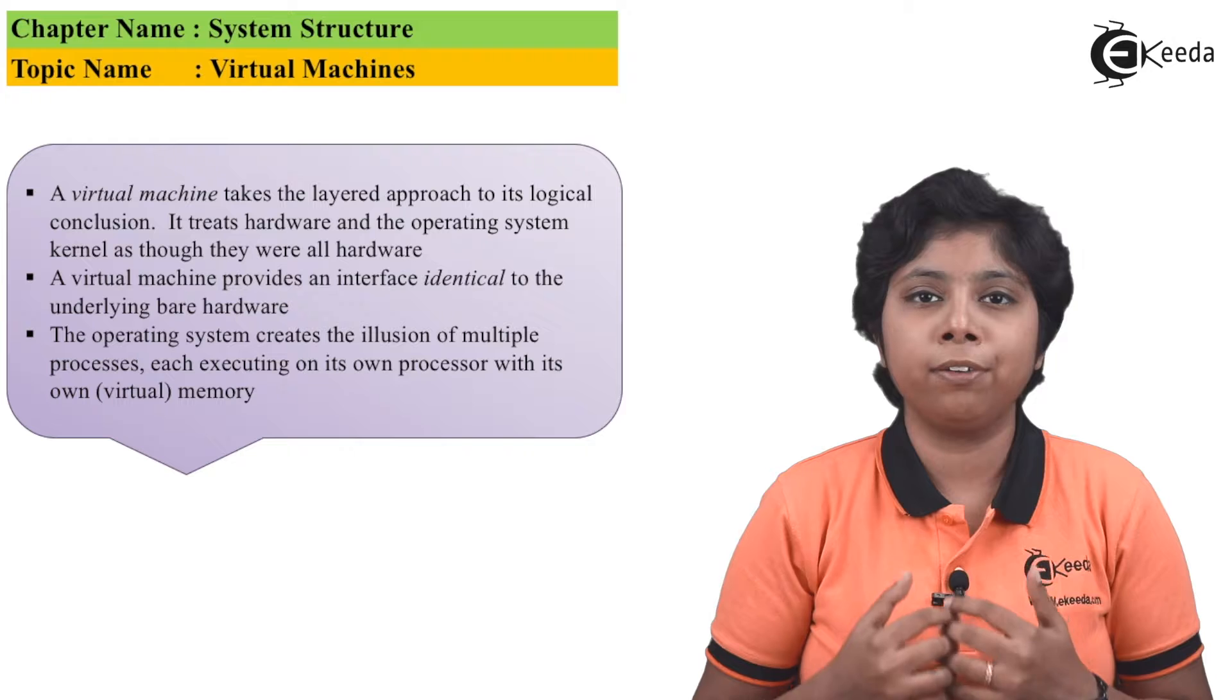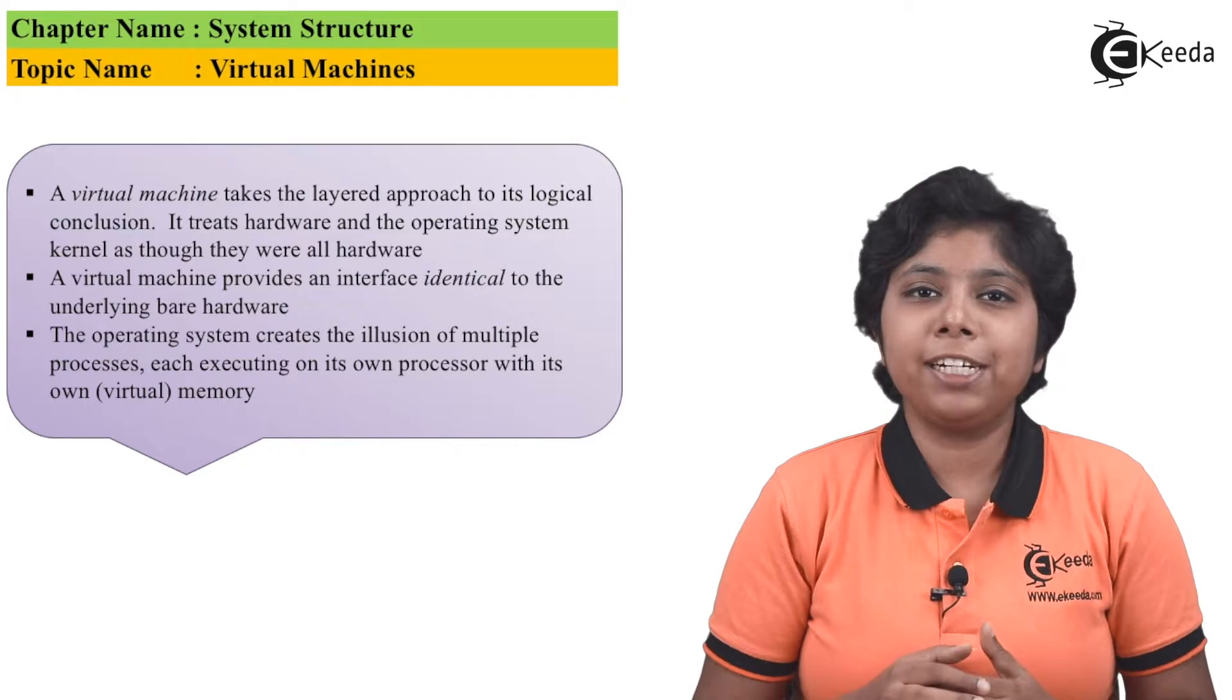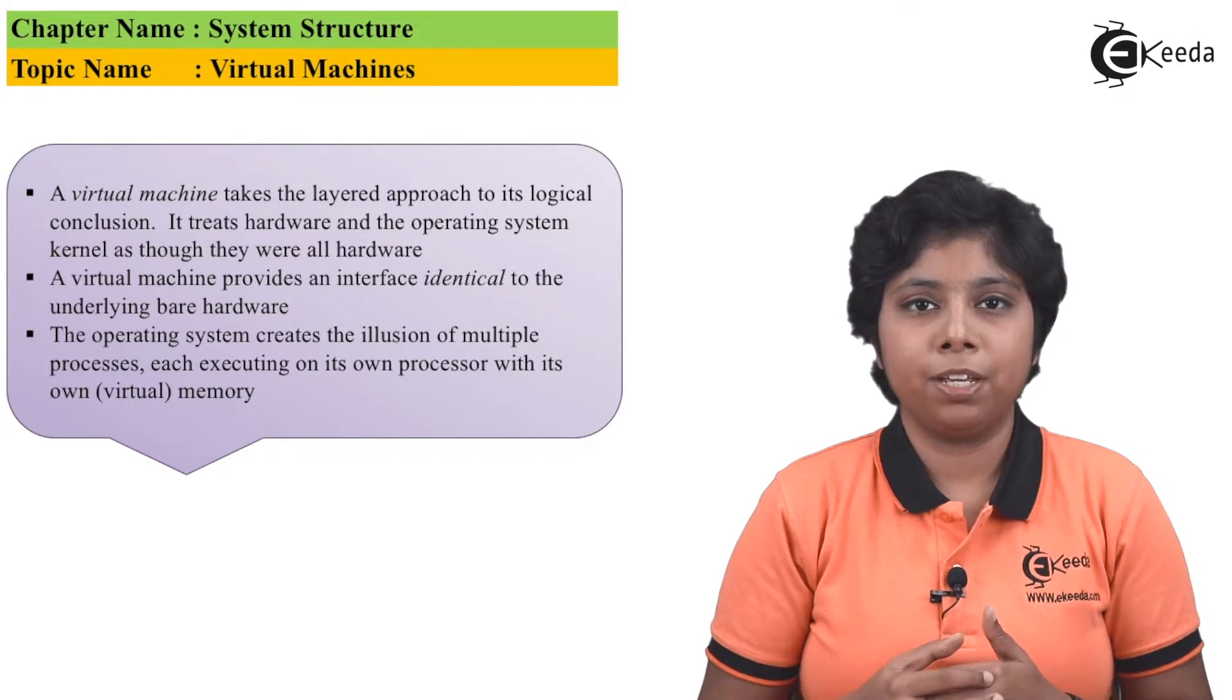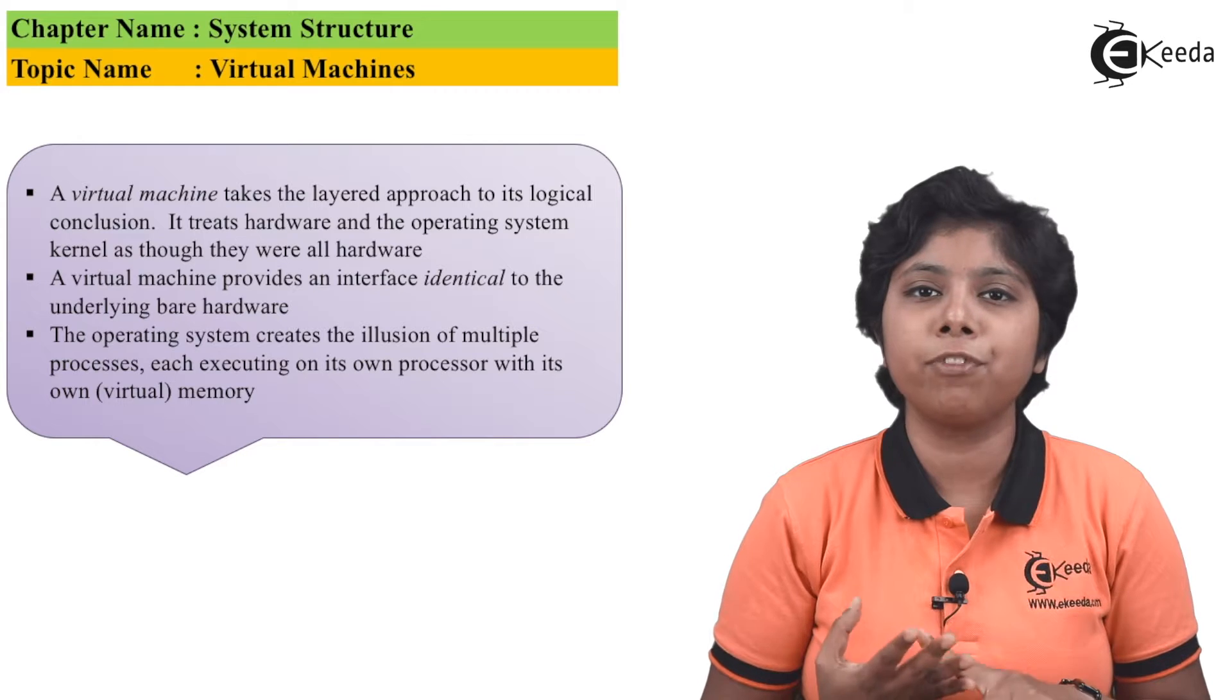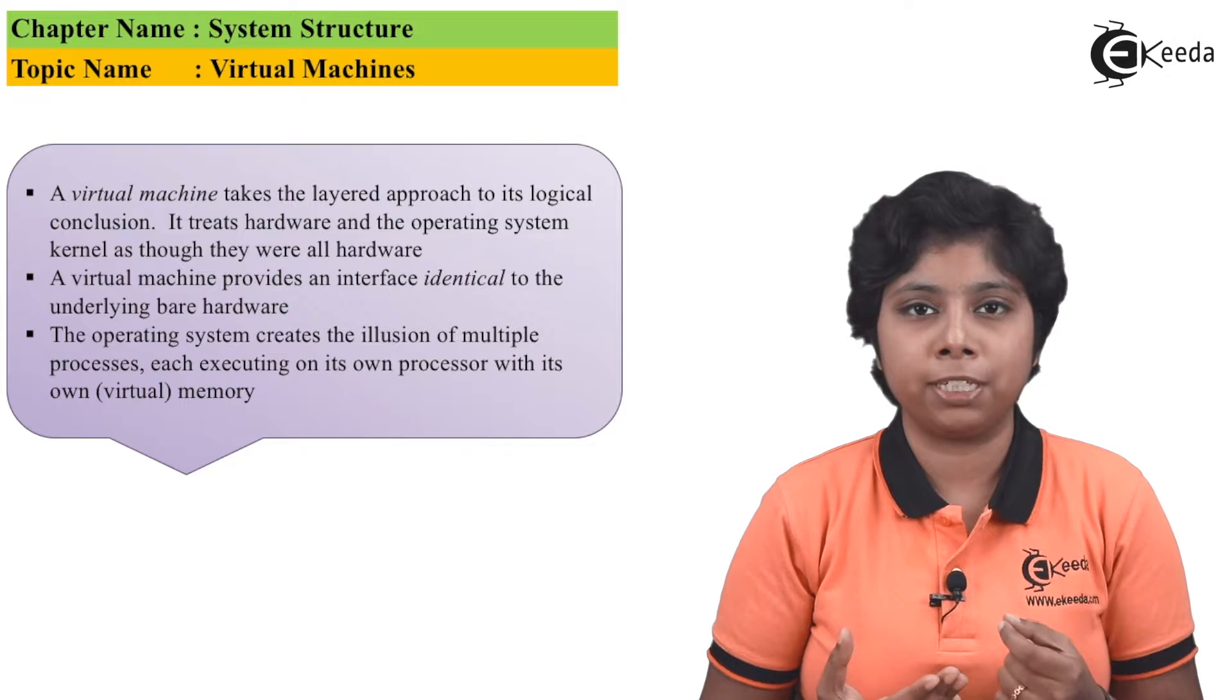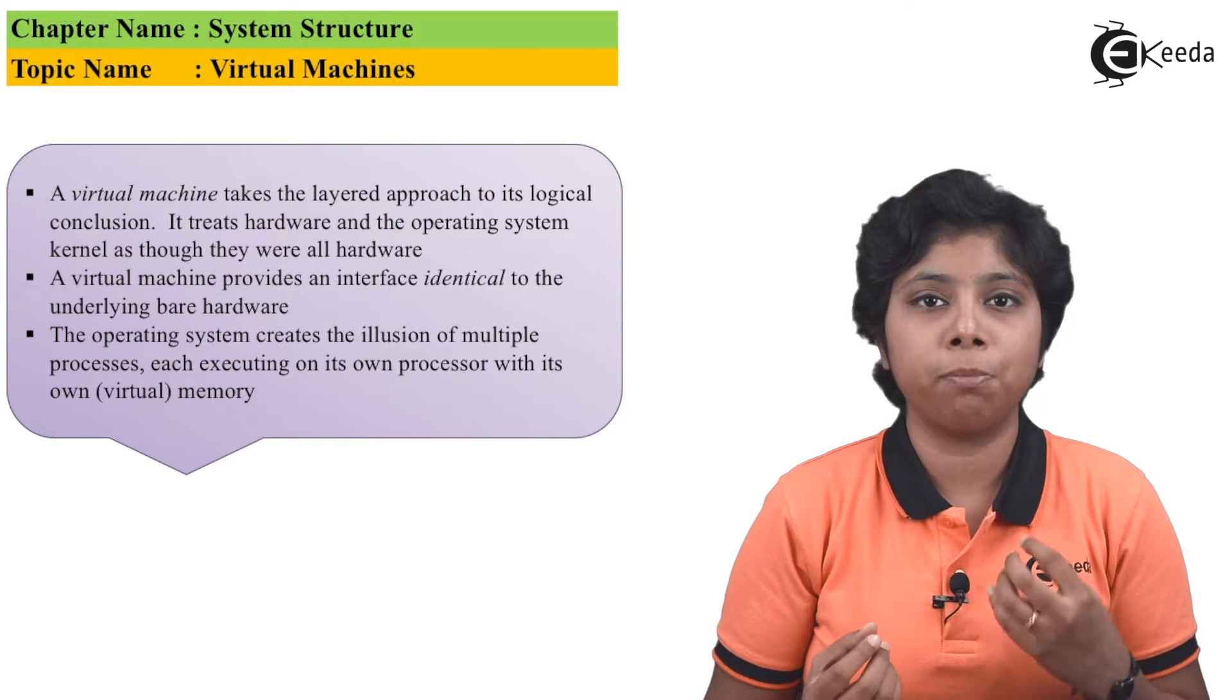Each process should be provided with a copy of the underlying computer system. A major difficulty in implementing virtual systems is the disk system. For instance, suppose a physical system has three disks and wants to implement seven virtual machines. One disk cannot be allocated to each virtual machine because each needs substantial disk space for spooling and virtual memory.